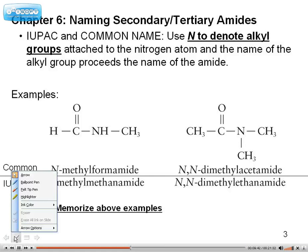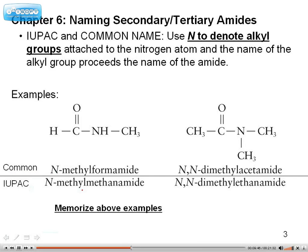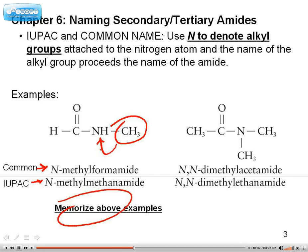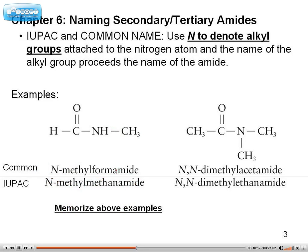Here are examples of secondary and tertiary amides — you have to memorize these examples. Here is the IUPAC name and here is the common name. It turns out that whenever we have a branch on the amide itself, it uses the N notation. So it would be N-methyl, and then the rest is the parent methanamide. Bottom line: you have to memorize these examples.